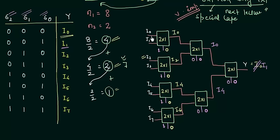So we will write it as S0 for these four MUX. This is your S1 and this is your S2.